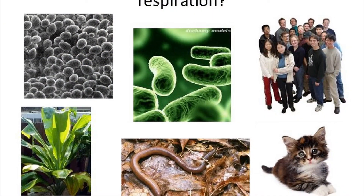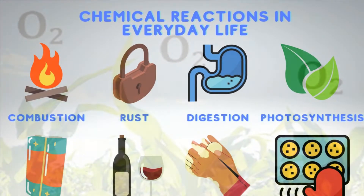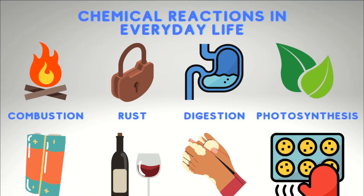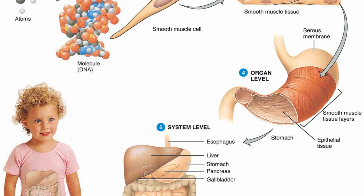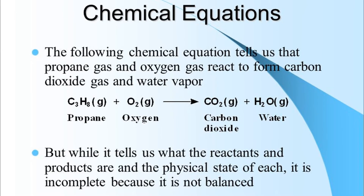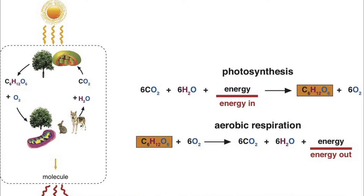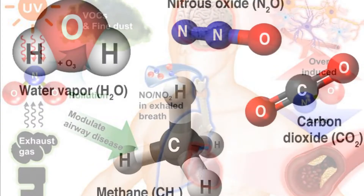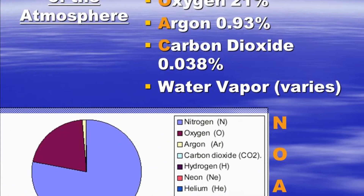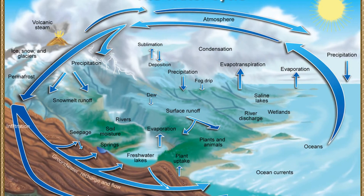Respiration is a process that occurs in all living organisms and uses up the oxygen of the air. As a result of the chemical reactions that take place between oxygen and the food within the body of the organism, carbon dioxide, water vapor, and energy are formed. The energy is used by the organism to carry out its bodily functions. The carbon dioxide and water vapor are given off into the surroundings.